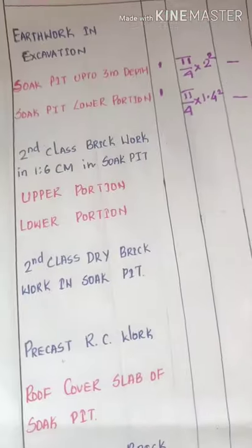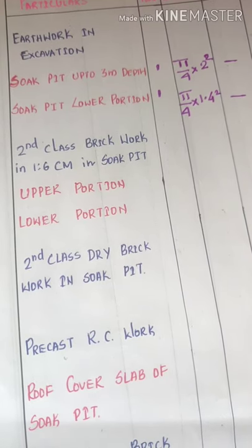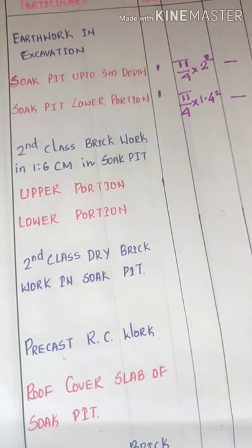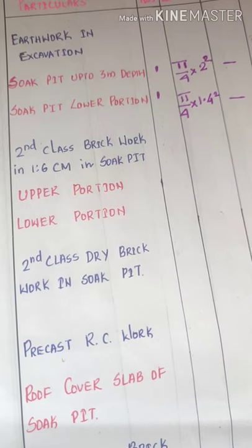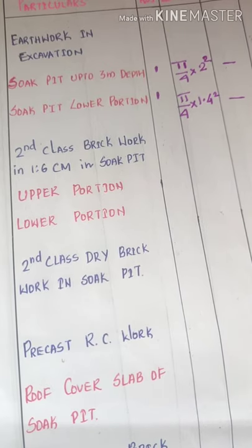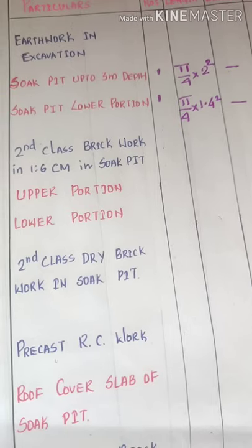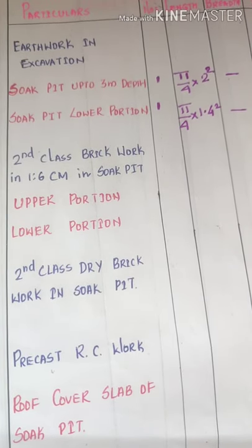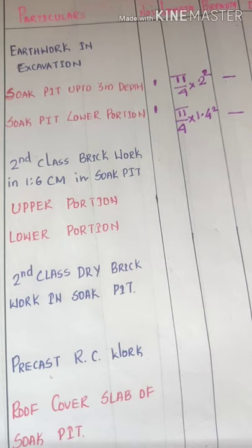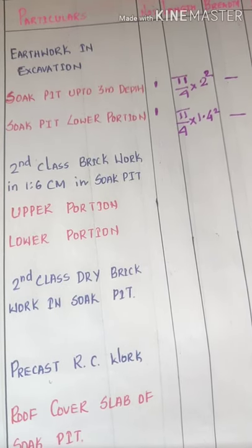Moving on to the next quantity — soak pit is made up of just brickwork and sand. No cement concrete is involved except for the main wall. Soak pit is generally constructed of second class brickwork in 1:6 cement mortar. Again, we have divided this into upper portion and lower portion.